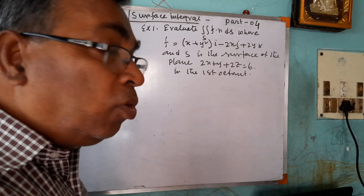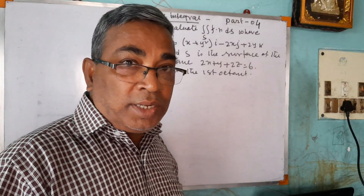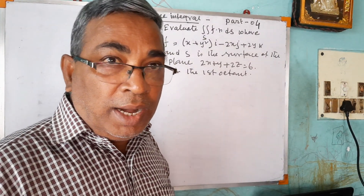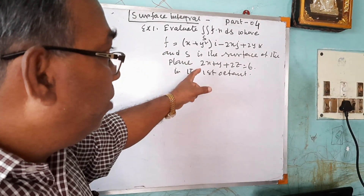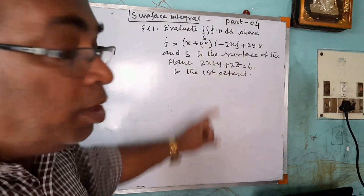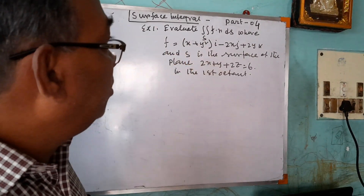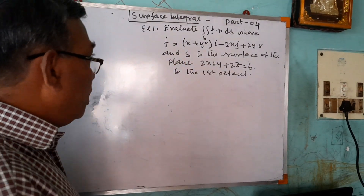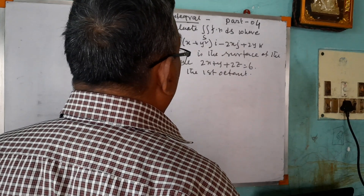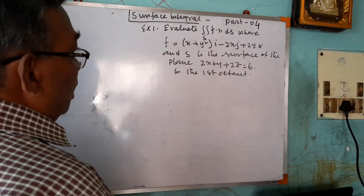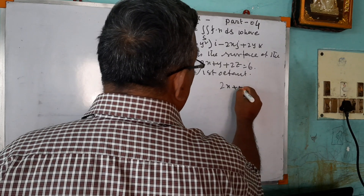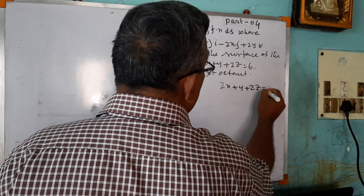Don't leave in the middle of this session. You have to see from first to last, then you will understand clearly how to solve this problem. This is a very important sum I have taken from a university paper — it has come many times. f is given, and s is the surface of the plane 2x + y + 2z = 6.